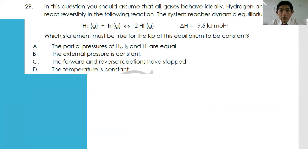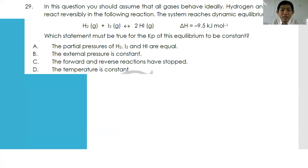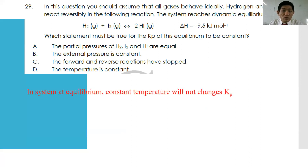Number twenty-nine: for H₂ + I₂ → 2HI with ΔH = −9.5 kJ/mol, which statement must be true for Kp to be constant? Option A: partial pressures of H₂, I₂, and HI are equal — wrong; they should be constant, not equal. Option B: external pressure is constant — wrong. Option C: forward and reverse reactions have stopped — wrong. Option D: temperature is constant — yes, because when temperature is constant, regardless of other changes, Kc and Kp remain the same.